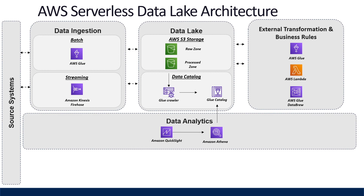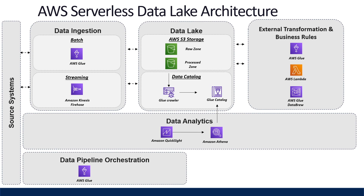Sometimes data processing jobs may be rather complex, with multiple Glue jobs that need to be triggered in a specific order. If you've developed your jobs using AWS Glue, you can use AWS Glue Workflows to create and visualize complex extract, transform, and load activities — including multiple crawlers, jobs, and triggers. Each workflow manages the execution and monitoring of each job and crawler. As a workflow runs each component, it records execution progress and status, and in the AWS Glue console you can see a visual representation of a workflow as a graph.